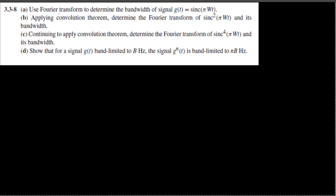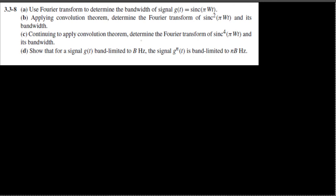Part A is asking: use Fourier transform to determine the bandwidth of signal g(t) = sinc(φωt). Part B: applying the convolution theorem, determine the Fourier transform of sinc²(φωt) and its bandwidth. Part C: continuing to apply the convolution theorem, determine the Fourier transform of sinc⁴(φωt) and its bandwidth. Note that for a signal g(t) band-limited to B hertz, the signal g^n(t) is band-limited to nB hertz.